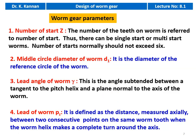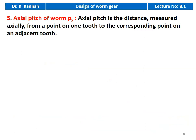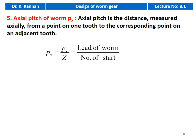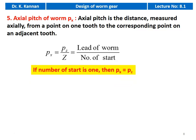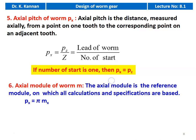The lead of the worm, Pz, is defined as the distance measured axially between two consecutive points on the same worm tooth when the worm helix makes a complete turn around the axis. The axial pitch of the worm, Px, is the distance measured axially from a point on one tooth to the corresponding point on the adjacent tooth: Px = Pz / Z, where capital Z is the number of starts and Pz is the lead of the worm. If the number of starts is 1, then Px = Pz. Normally we design for number of starts equal to 1 or 2 maximum. The axial module Mx is the reference module on which all calculations and specifications are based: Px = π × Mx, where Mx is the axial module.